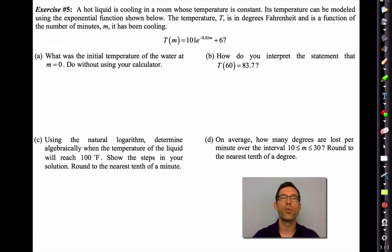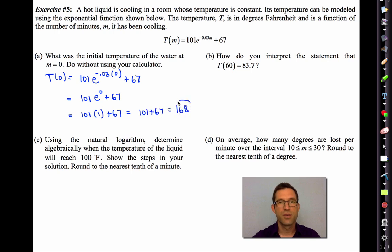Letter A says, what was the initial temperature of the water at M equals zero? Do without using your calculator. Now I always worry that people will either tell me 101 or they'll tell me 67, neither one of which is correct. In fact, we can see the correct temperature by just sticking in zero for M. So let's do it. T(0) = 101 times e to the negative 0.03 times zero plus 67. Negative 0.03 times zero is zero. So we'll get that. Then e to the zero is one. But then that will be 101 plus 67. So the liquid started at a temperature of 168.